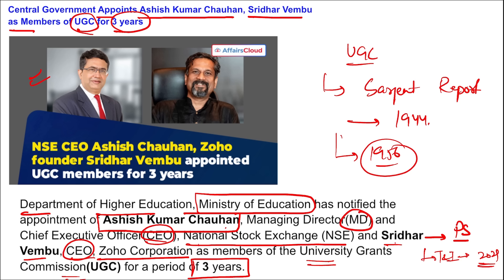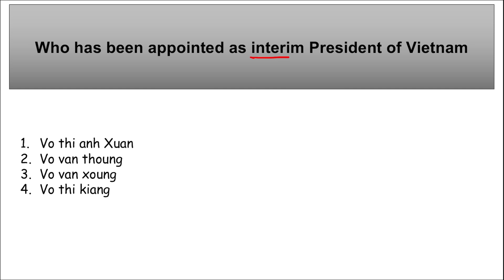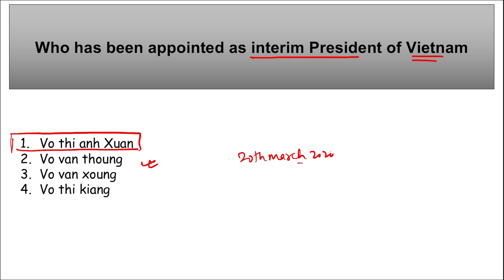Next: who has been appointed as the interim president of Vietnam? Vo Thi Anh Xuan was appointed as the interim president of Vietnam. She will be succeeding Vo Van Thuong, who resigned from the post of president on 20th March 2024. She has been serving as Vice President of Vietnam since March 2023, and previously held the post of interim president of Vietnam in January 2023.